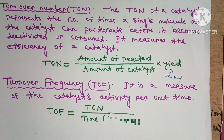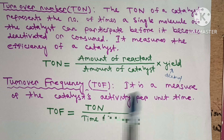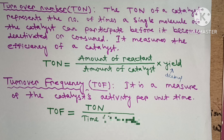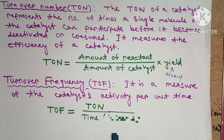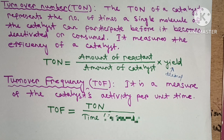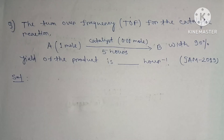Turnover frequency is the turnover number per unit of time — that is, how many cycles are performed per unit of time. It is a measure of catalyst activity per unit of time. The formula is: turnover frequency equals turnover number divided by time.